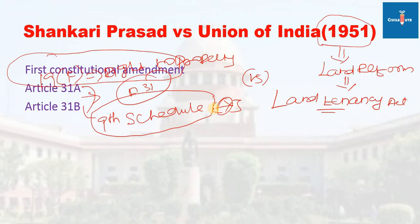Laws placed in the 9th Schedule are not subject to judicial review. Article 31B provides that laws in the 9th Schedule shall not be considered void on grounds of violating fundamental rights.